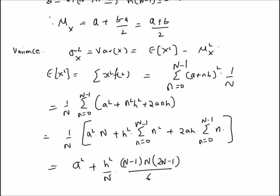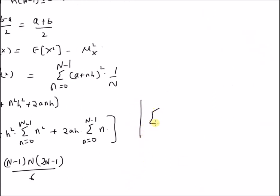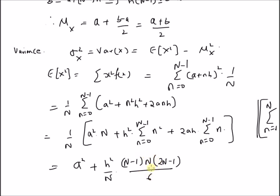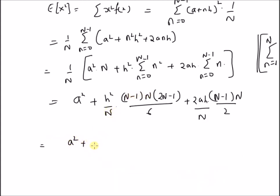This value comes from the formula: summation from n equal to 1 to capital N of n squared is equal to N into N plus 1 into 2N plus 1 divided by 6. By using this formula, we have the summation of the first n minus 1 squares of the natural numbers. The next term is plus 2ah into the sum of the first n minus 1 natural numbers, which is n minus 1 into n divided by 2, all divided by N.